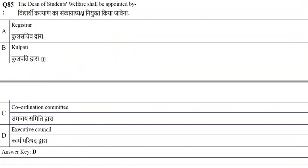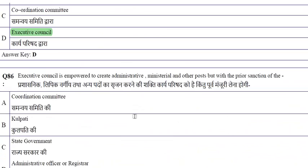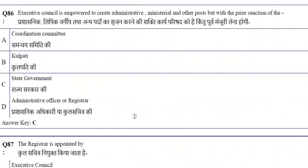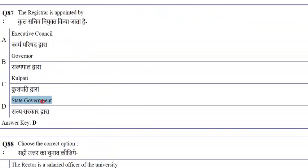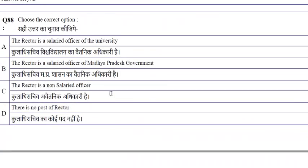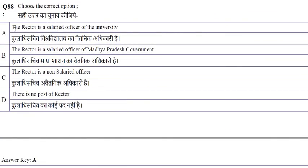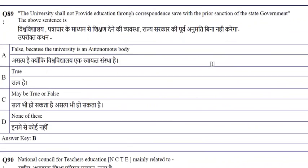The Dean of Students Welfare shall be appointed by the Executive Council. The Executive Council is empowered to create administrative, ministerial, and other posts, but with prior sanction of the state government. The registrar is appointed by the state government. The rector is a salaried officer of the university. The university shall not provide education through correspondence without prior sanction of the state government.